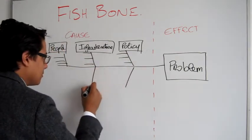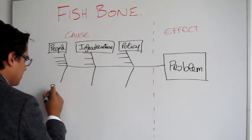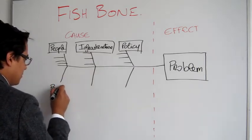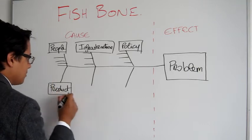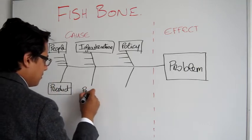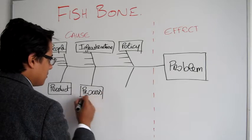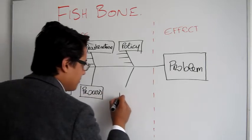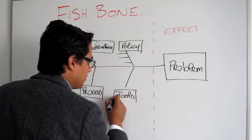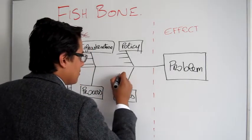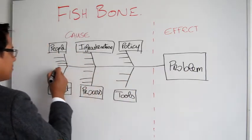And you can also drill deeper by asking why five times. For example, why do we have too many approvals? Because we don't trust the data. Why don't we trust the data? Because there are too many errors. Why do we have too many errors? Because we run reports at different times. It's as simple as that.